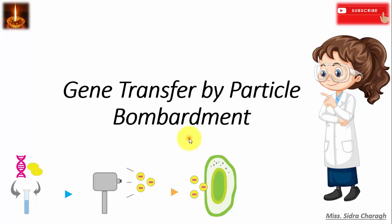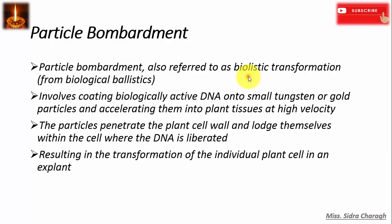We will discuss gene transfer by particle bombardment, also known as biolistic transformation. Biolistic transformation involves coating biologically active DNA molecules onto small tungsten or gold particles and then accelerating them into plant tissues at high velocity. The particles penetrate the plant cell wall and enter the cell, where the DNA is liberated, resulting in transformation of individual plant cells in an explant.